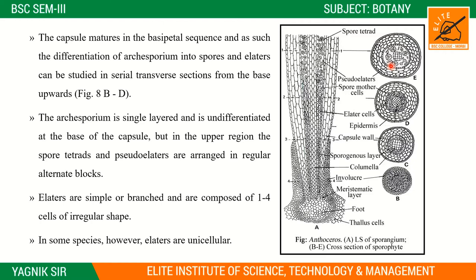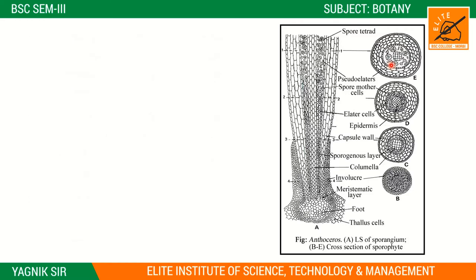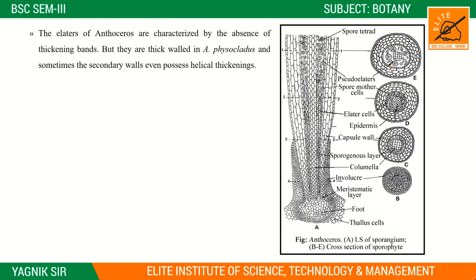In some species, however, elaters are unicellular; normally they are multicellular, but among some species elaters are unicellular. The elaters of Anthoceros are characterized by the absence of thickening bands, but they do have thick walls. In Anthoceros phycocladius, the secondary walls sometimes possess helical thickening.